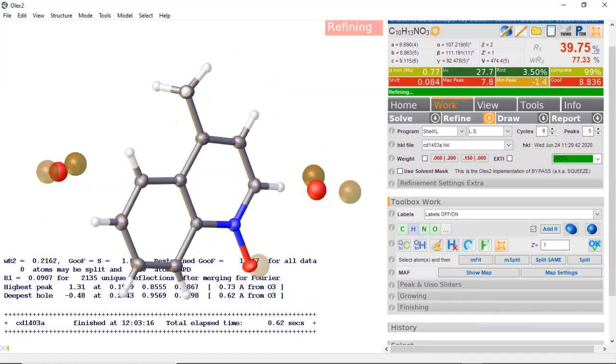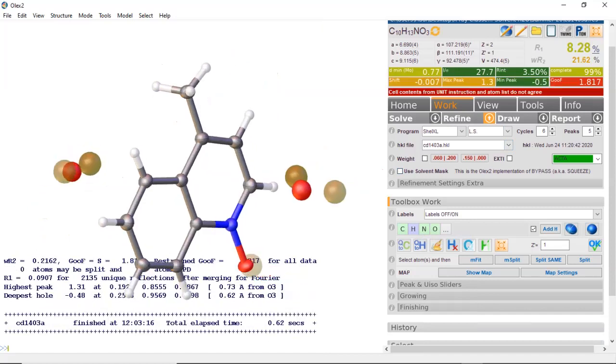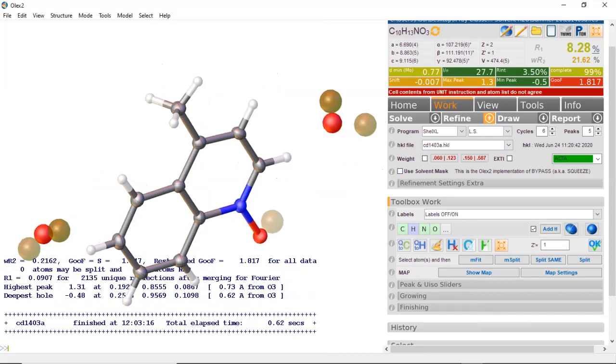Obviously here it would not be ideal to use the squeeze because it didn't help improve our model. Since these water molecules are very well defined in the crystal lattice, the best option is to model those water molecules. But if for some reason you couldn't model the solvent, that's the process you would go through in using the solvent mask or what's commonly referred to as squeeze.